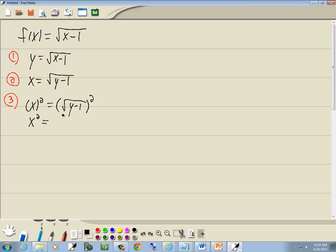So that gives us x squared. And the square root and the second power cancel each other and leave us y minus 1. Take the negative 1 over, we get x squared plus 1 is equal to y.